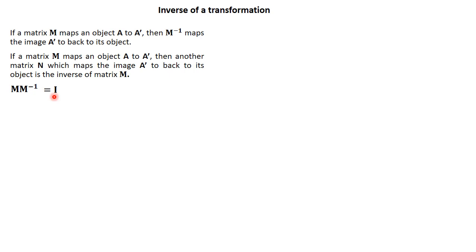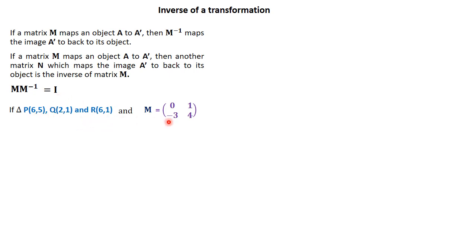To cement this concept using an example, let's consider the following. We are given a triangle PQR with coordinates given, and a matrix M = [0, 1; -3, 4]. We will first transform triangle PQR using this matrix, then look for the inverse of the matrix, transform the image, and see if it gets us back to the object.